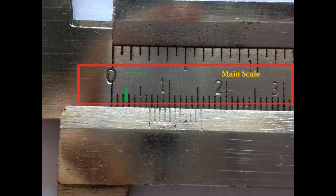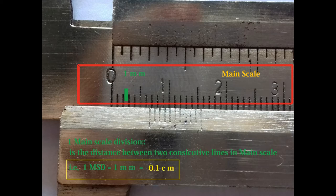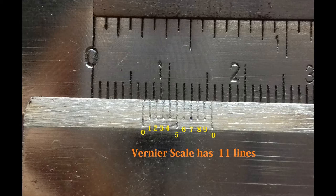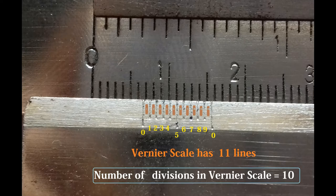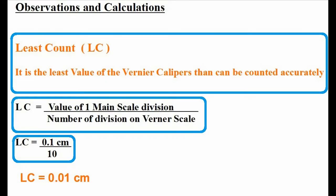Least count equals value of one main scale division divided by number of divisions in Vernier scale. In our case, value of one main scale division is 1 mm or we can write it as 0.1 cm. Number of divisions in Vernier scale: we already said there are 11 lines in Vernier scale, so in between each line there is one division. So how many divisions? 11 minus 1, that is 10 divisions. So putting it together, least count equation will be 0.1 cm divided by 10 which equals 0.01 cm. Least count of Vernier calipers that we are using here is 0.01 cm.